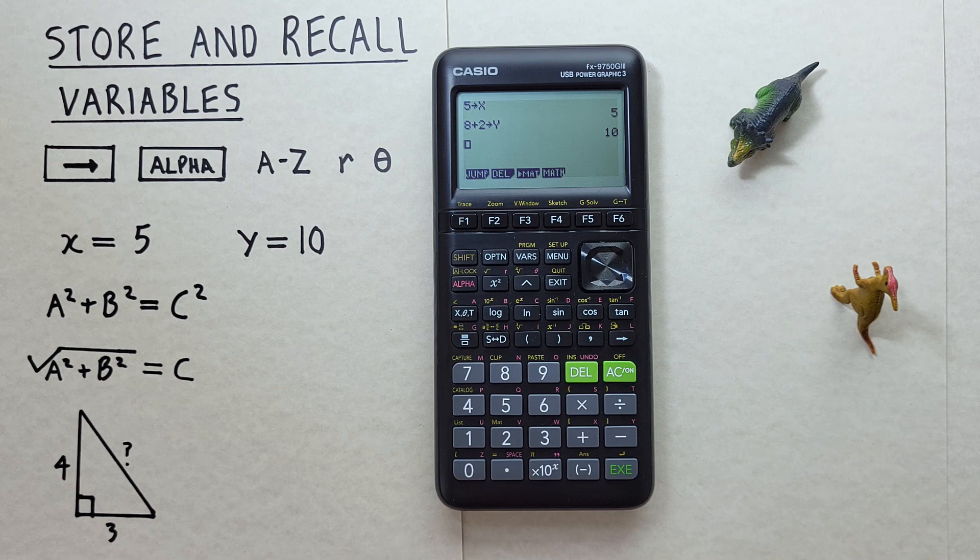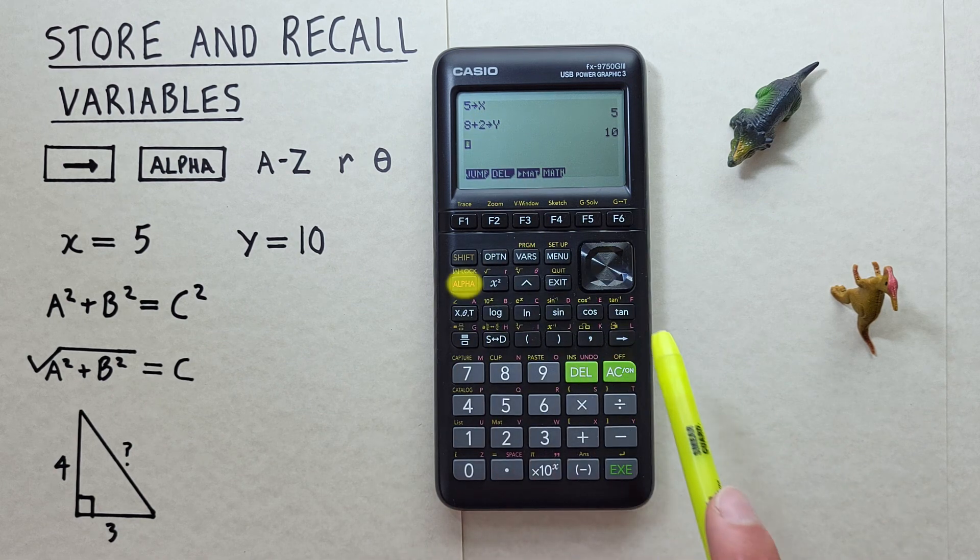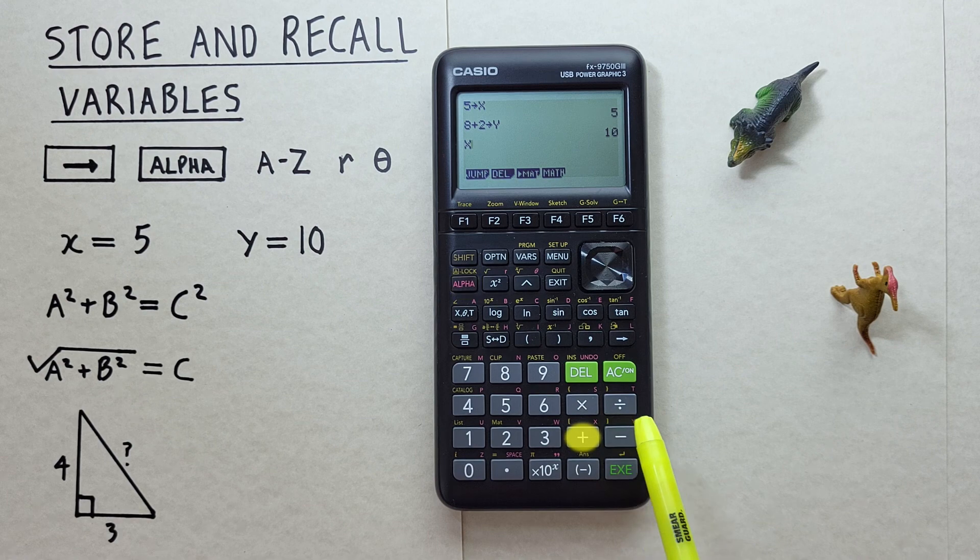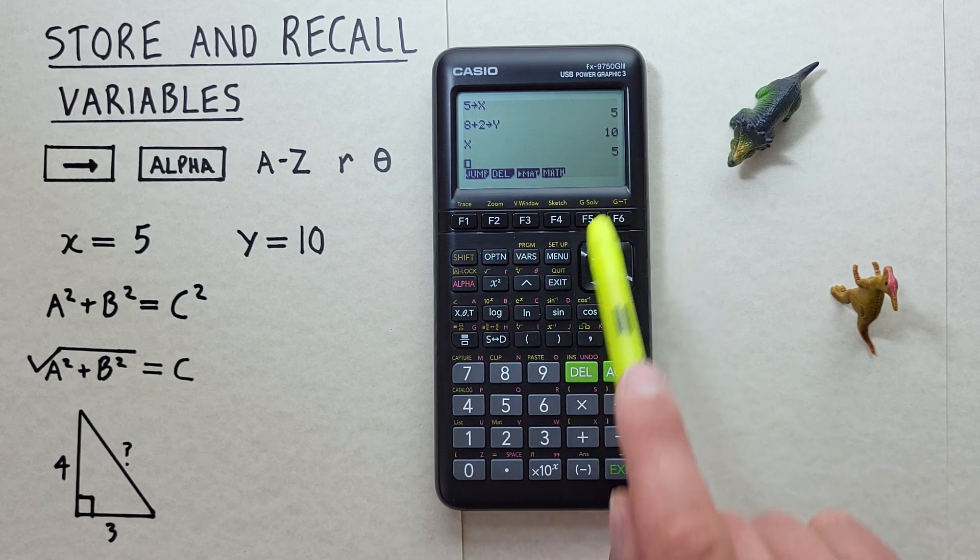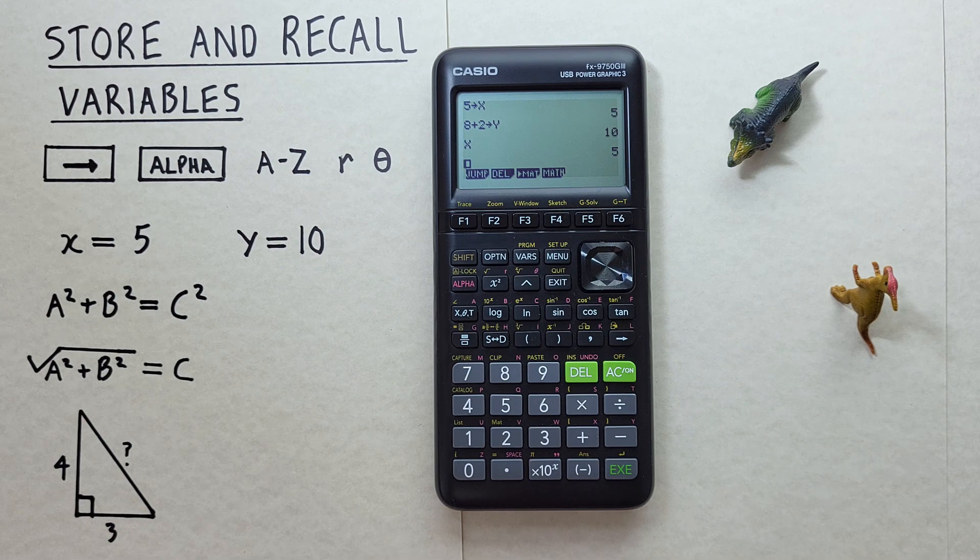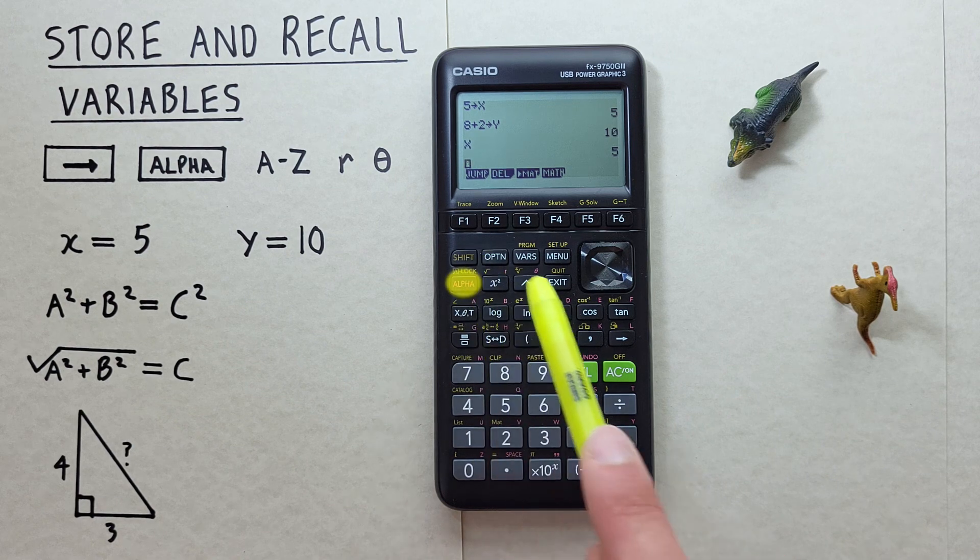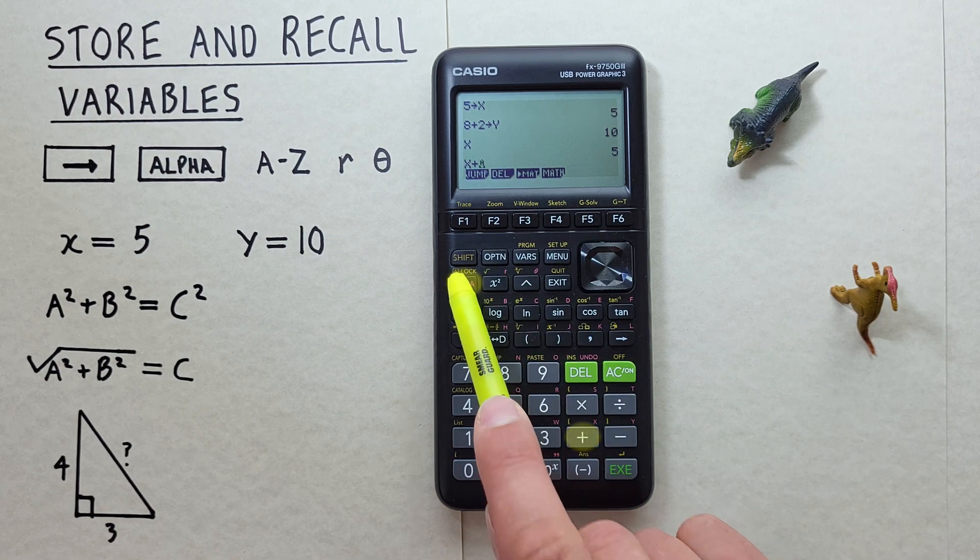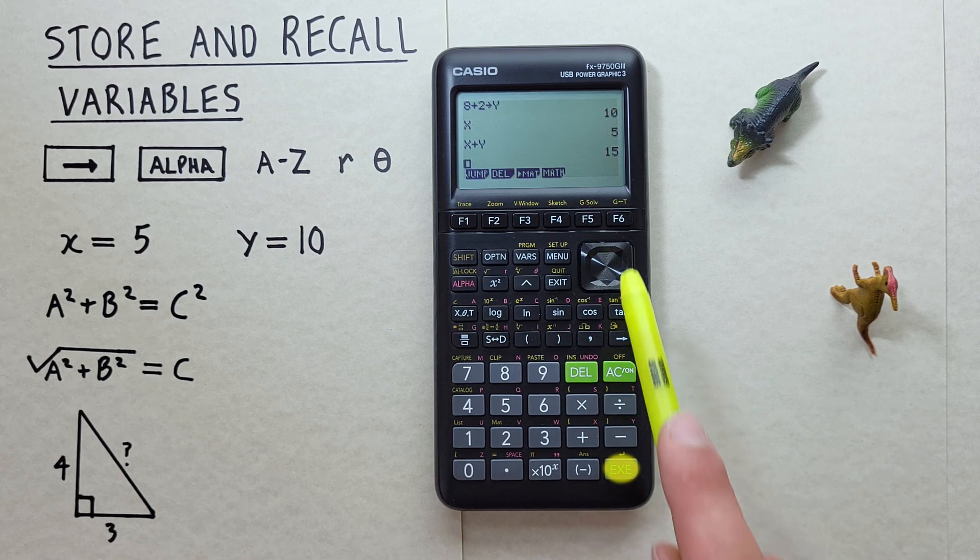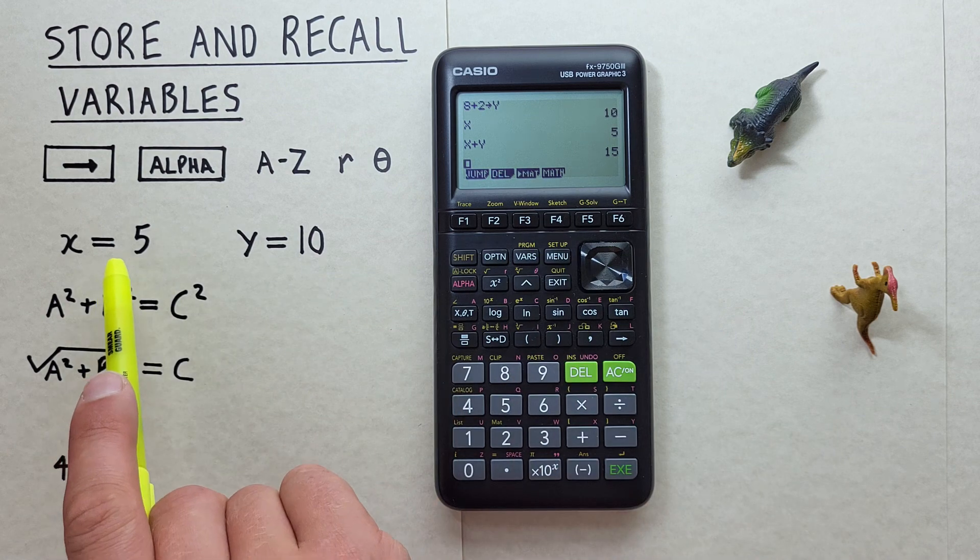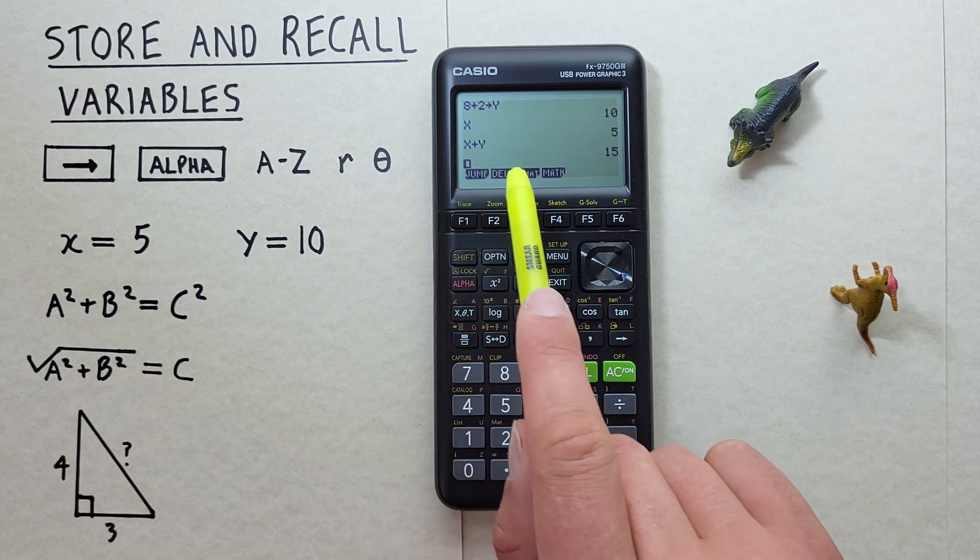If we want to recall these values, we again use the alpha function. So if we want to bring back our X value, we press alpha X, and press EXE, and see that it gives us 5. With this, we can do a calculation like X plus Y. So if we go alpha X plus alpha Y, hit EXE, and we get 15, which is 5 plus 10, or X plus Y.